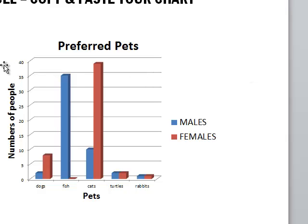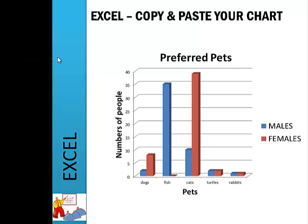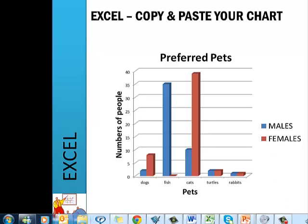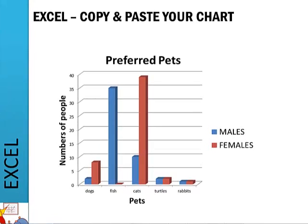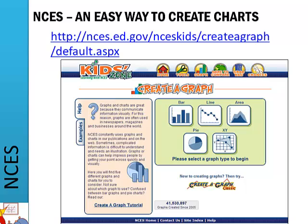So that's using Excel. Now there's another option you might like. It's called NCES — instead of using Excel, we can use this website. Basically it's aimed at children, but I think it's a really nice website. It's very easy to use and it creates very attractive charts. So it's something you might want to investigate if you don't feel comfortable with Excel or if you just want to try something different.